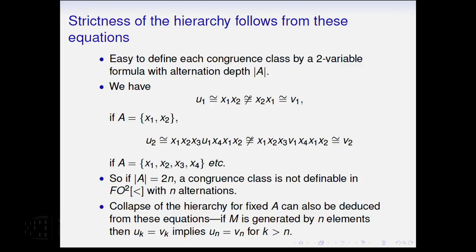And the reason these two words are not congruent is that in both cases, the first letter to appear when you're reading from left to right is X4. And then if you take that prefix, the first letter to appear reading from right to left is X3, and that would then imply that U1 has to be congruent to V1 over the smaller alphabet, and it's not. So if you have a pair that's not congruent, you build them up this way and you get other pairs that are not. And this shows that if the alphabet has two N letters, a congruence class for this congruence is not definable, and you can actually get that two N down to N plus two by using a slightly different congruence. It's also possible using this algebraic method to get another proof of the other result of Weiss and Nimmermann that this hierarchy collapses for a fixed finite alphabet A because if the monoid is generated by N elements, it's possible to change the equation for any K greater than N actually implies that the equation holds for N as well.